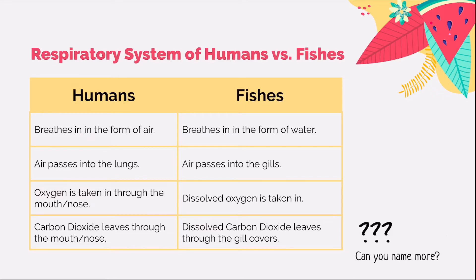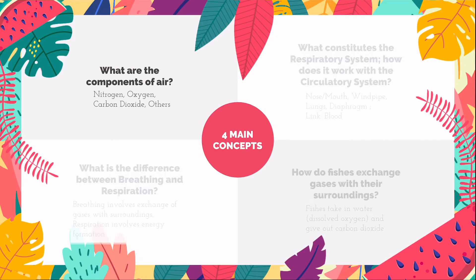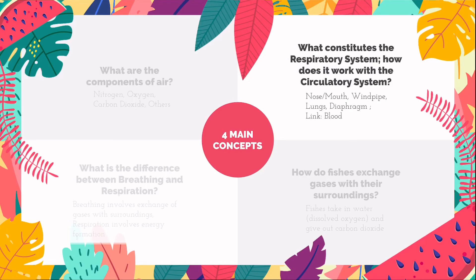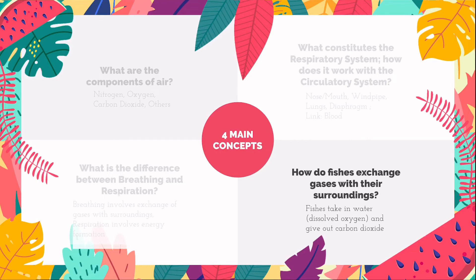Can you name more similarities and differences between the respiratory systems of humans and fishes? Let's recap the four main concepts we have learnt. The main components of air are nitrogen, oxygen, carbon dioxide, and other smaller amounts of gases. The respiratory system is made up of the nose, mouth, windpipe, lungs, and diaphragm, and is linked to the circulatory system via blood vessels. Breathing involves the exchange of gases between our body and the surroundings, while respiration involves energy production by all living cells. Finally, fishes take in dissolved oxygen and give out carbon dioxide by taking in water through the mouth.